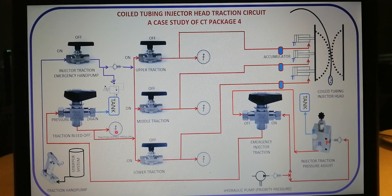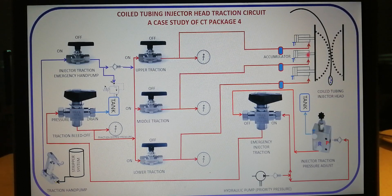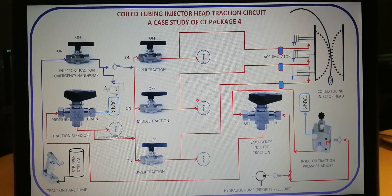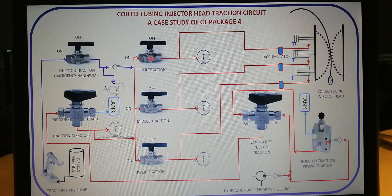Hydraulic then flows out from this bottom port and is distributed to each of the on and off traction control two-way valves. This gauge helps to monitor the applied hydraulic pressure from the injector traction pressure adjust. Finally, each of these valves diverts hydraulic flows to their respective traction cylinders on the coil tubing injector head — the lower traction control valve to the accumulator and then to the active end of the lower traction cylinder, the middle traction control valve to the accumulator and then to the active end of the middle traction cylinder, and the upper traction control valve to the accumulator and then to the active end of the upper traction cylinder.